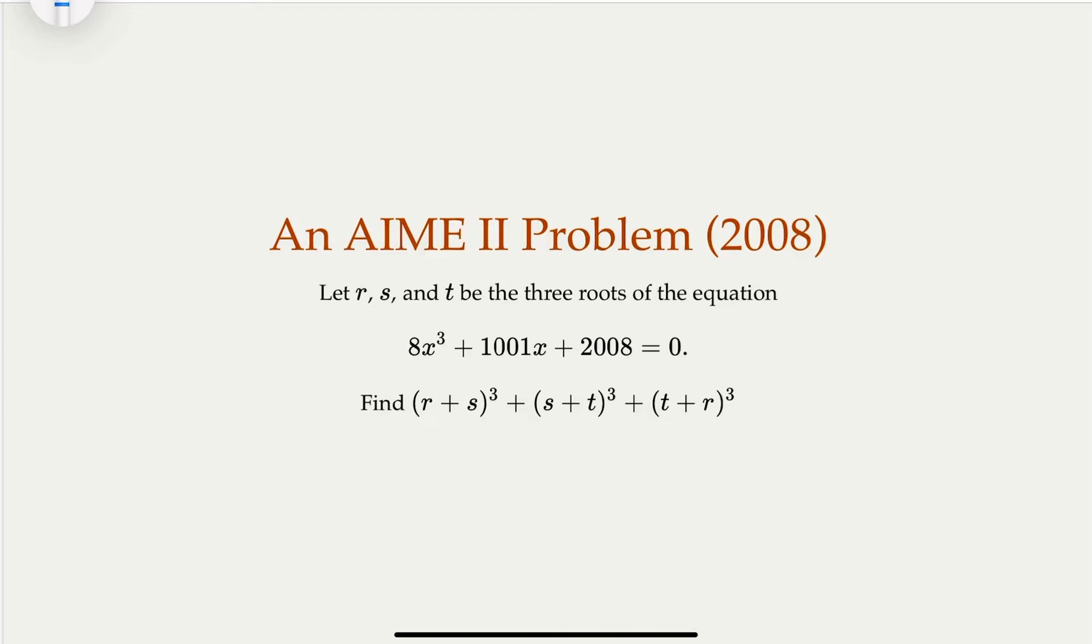All right, today we're going to look at an AIME problem, and this is another example where Newton's identity may not be used directly, but the related tricks about the sum of roots, sum of squares, sum of cubes. So that is quite common.